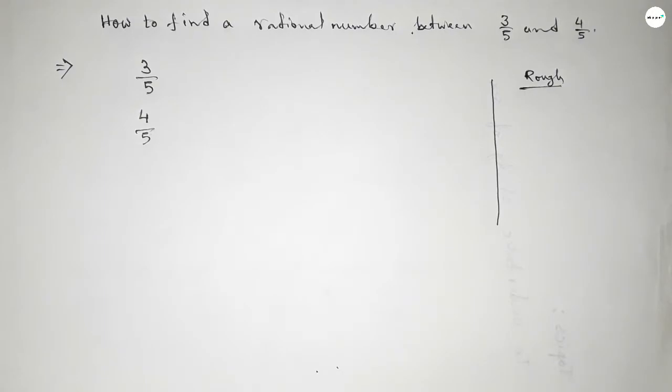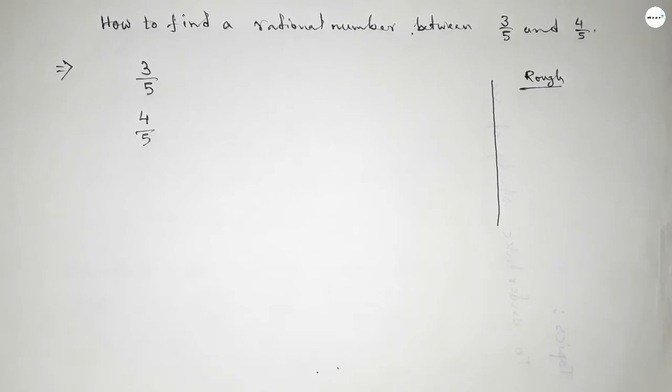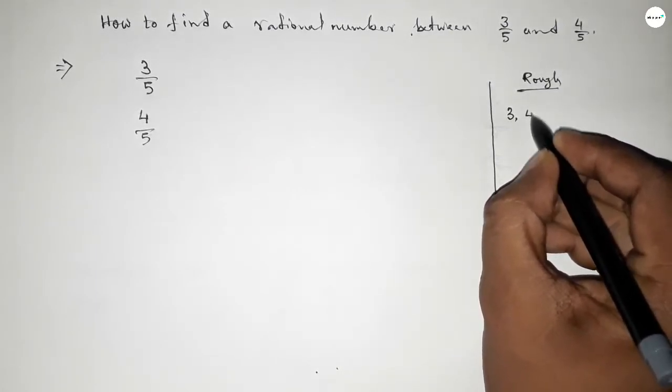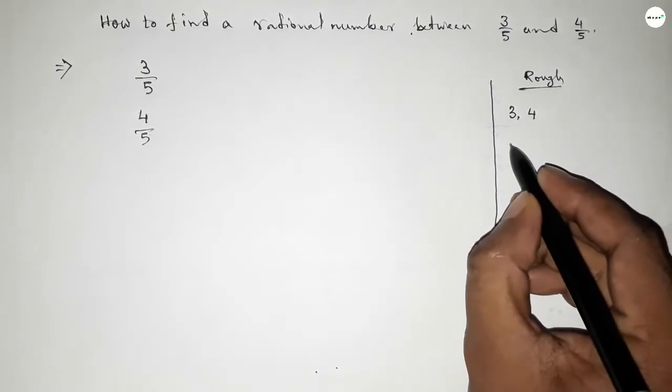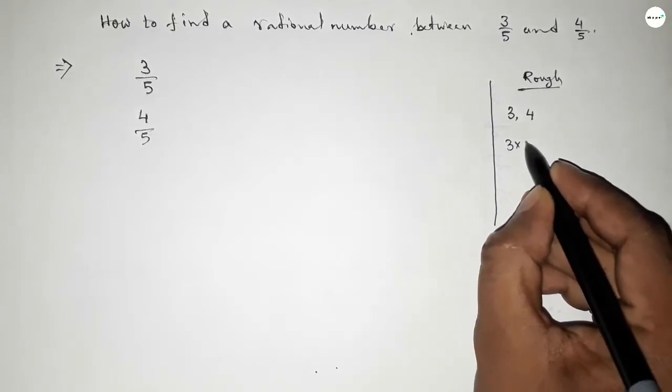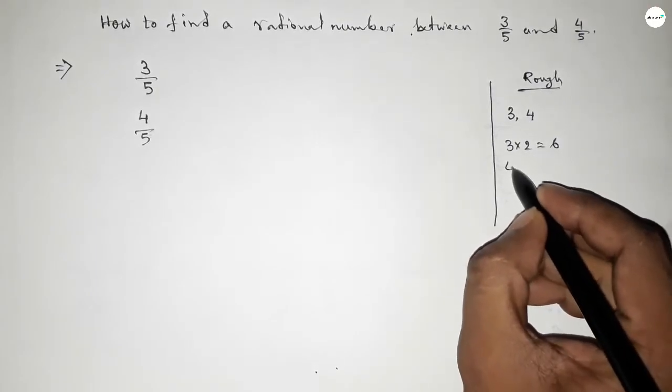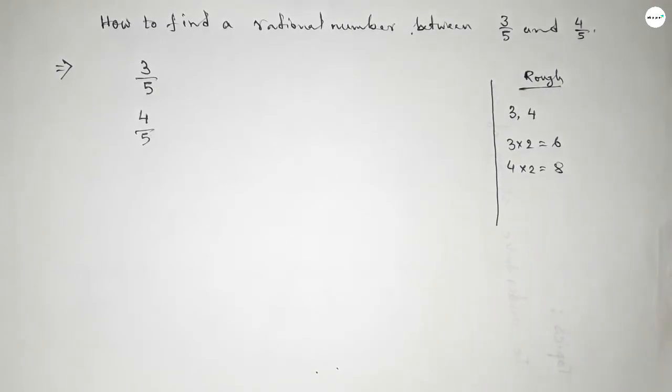We can find infinite numbers between 3 and 4, but I want to find a natural number. If you multiply 3 by 2, you get 6. If you multiply 4 by 2, you get 8. So between 6 and 8, we can get one natural number.